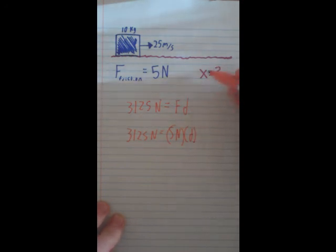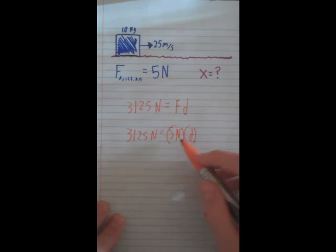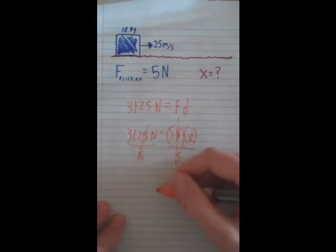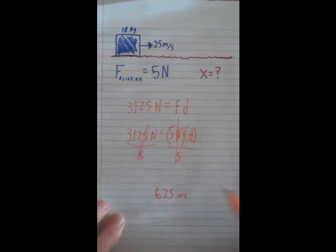So we just divide 3,125 by 5, and that will end up equaling 625 meters. And that's how you figure that out.